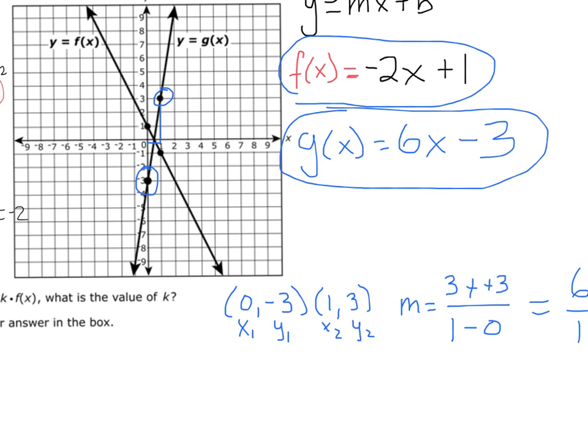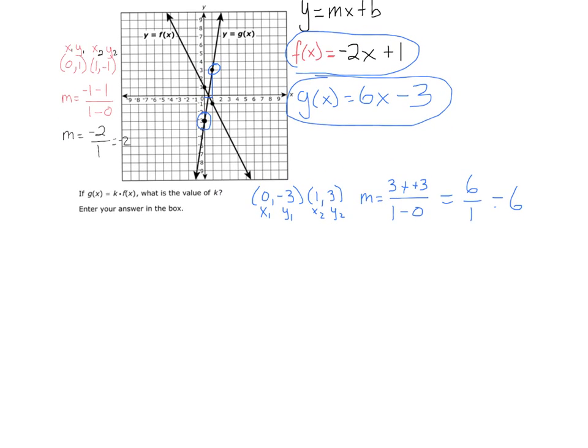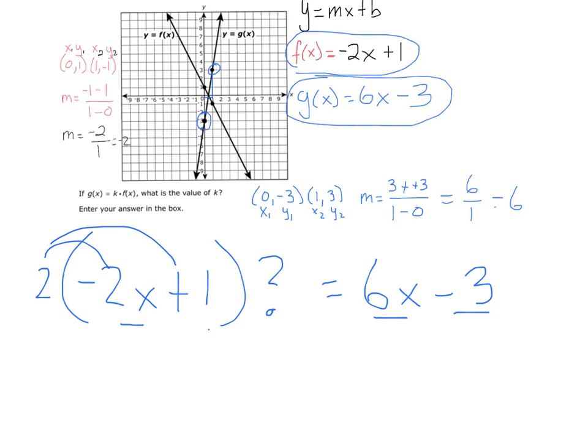Now, the question is, what do I need to multiply f of x by so that I end up with g of x? In other words, -2x + 1 times what will give me 6x - 3? Well, what if I multiply it by 2? If I take this 2 and I distribute it, well, that'll give me -4x + 2, but I need 6x - 3. -2 times what gives me positive 6?